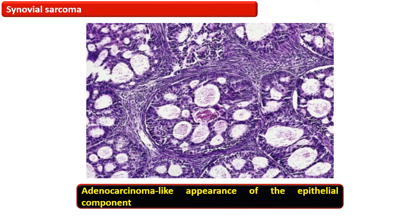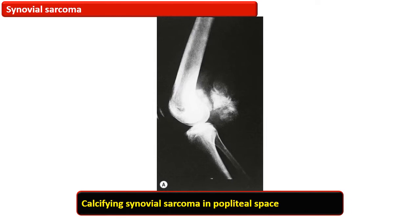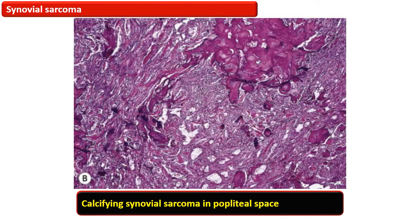This photomicrograph shows synovial sarcoma with an adenocarcinoma-like appearance of the epithelial component. In synovial sarcoma, there can be associated hyalinization, calcification, or osseous metaplasia. When heavy calcification is present, it is termed calcifying synovial sarcoma. This is the radiological appearance of calcifying synovial sarcoma in the popliteal space. The osteoid and bone formation can be so extensive that it sometimes obscures the true nature of the tumor.